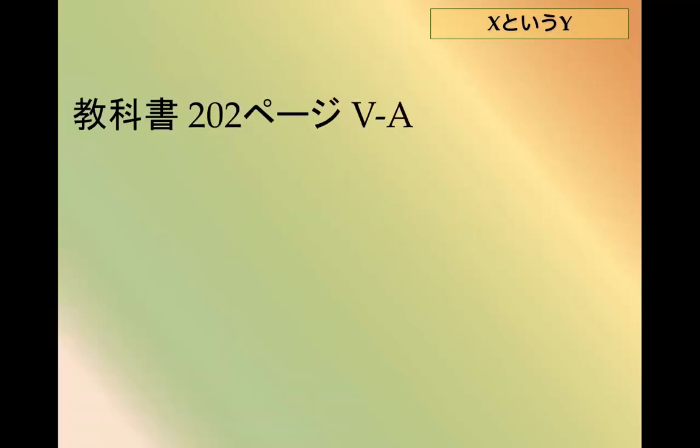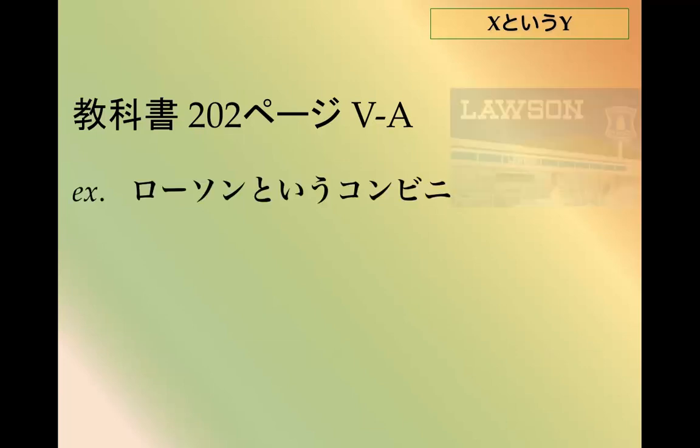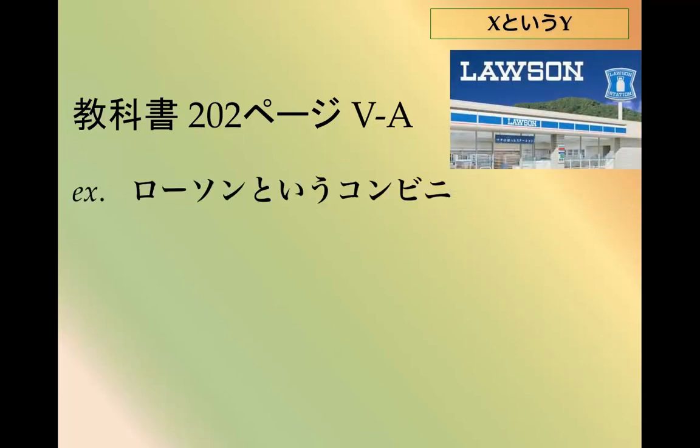Look at textbook page 202, Drill 5a. For example, Lawson to you konbini — this is going to be a fragment — a convenience store called Lawson, or named Lawson.